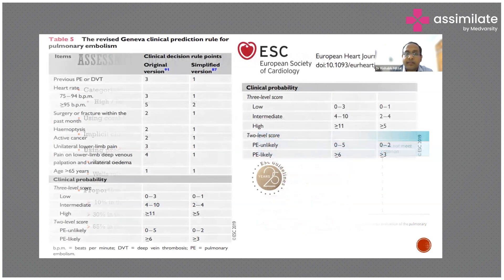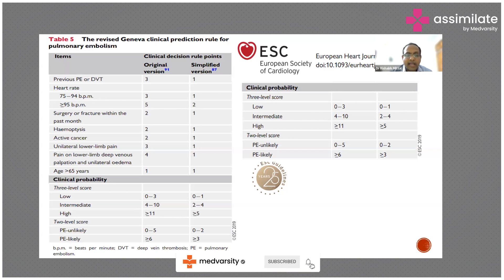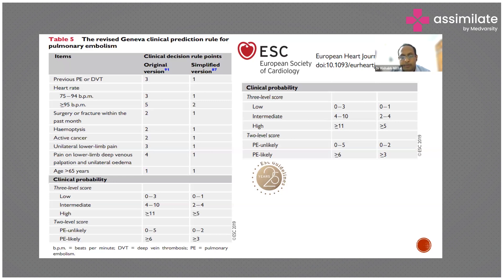The most validated prediction rule is the Revised Geneva Clinical Prediction Rule. It incorporates history of DVT, heart rate, history of surgery, hemoptysis, cancer, unilateral lower limb pain, pain on deep venous palpation, and age more than 65 years. In the original version, a score less than 3 is low probability, and more than 10 is high probability. In the simplified version, a score of 0–1 is low probability and ≥5 is high probability.